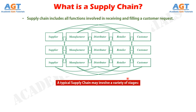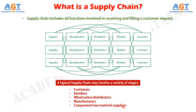A typical supply chain may involve a variety of stages, including the customers, the retailers, the wholesalers or distributors, the manufacturers, and the component or raw material suppliers. Each stage in a supply chain is connected through the flow of products, information, and funds. These flows often occur in both directions and may be managed by one of the stages or an intermediary. Each stage does not need to be present in a supply chain; the appropriate design depends on both the customer's needs and the roles played by the stages involved.